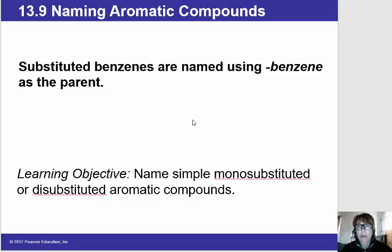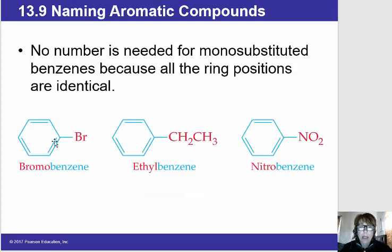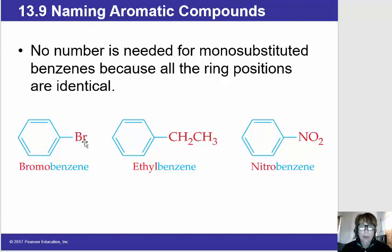Let's look at naming simple mono and di-substituted benzenes. If we only have one substituent bonded to the benzene — and notice that these substituents are all taking the place of a hydrogen, so there's going to be a single bond from the benzene ring to that substituent — if there's only a single substituent, then no number is needed. For example, if there's one bromine attached to the benzene ring, we would call it bromobenzene.